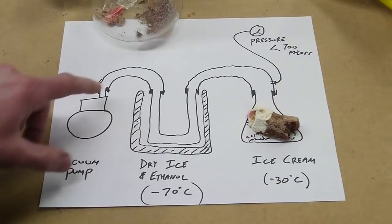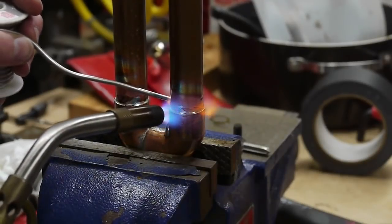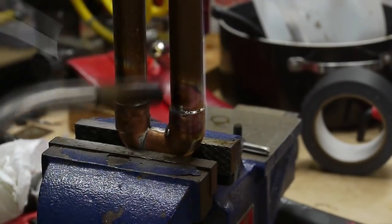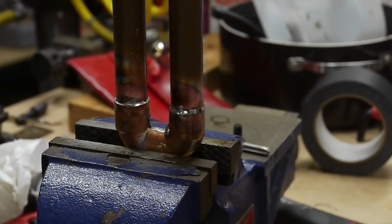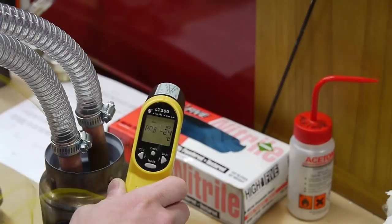The next piece I built was this cold trap, which is a piece of copper pipe and some standard pipe fittings that I cut and sweated together, standard solder. And they're sitting in a thermos, a stainless steel thermos that I filled with ethanol and dry ice.